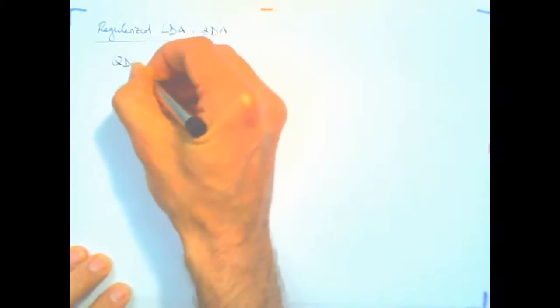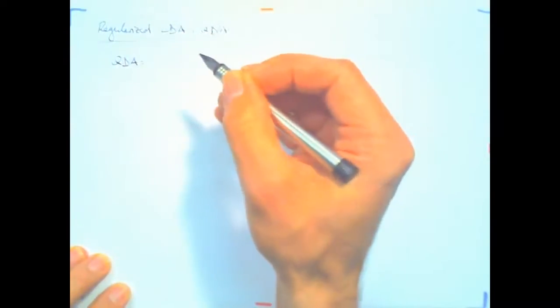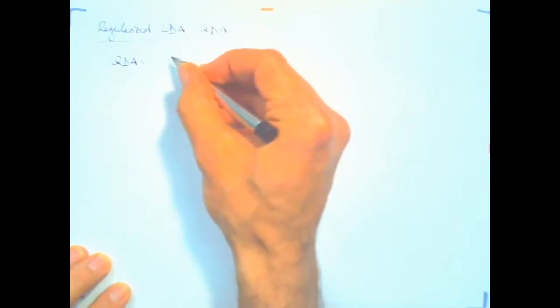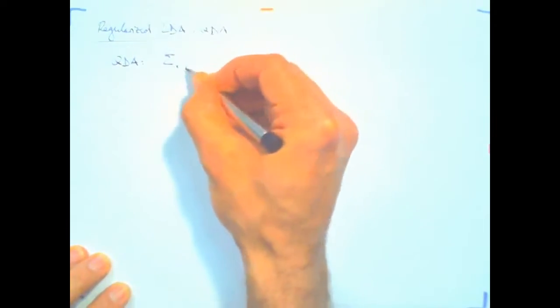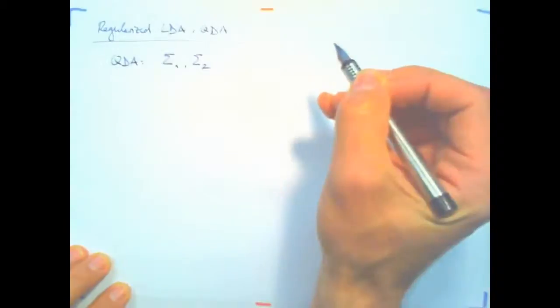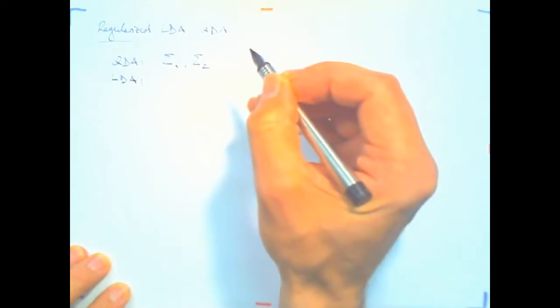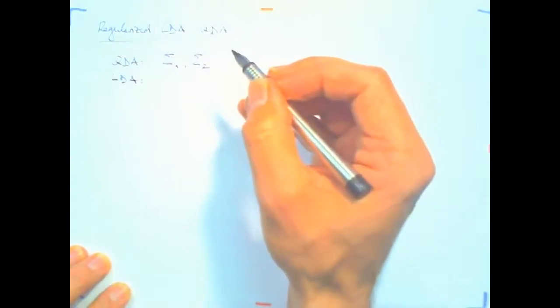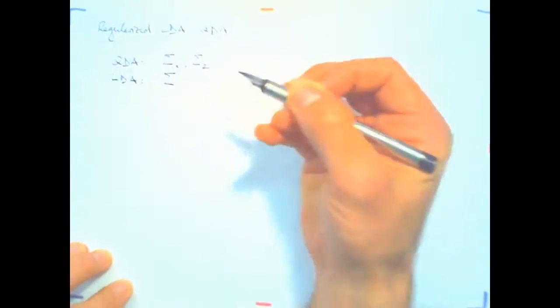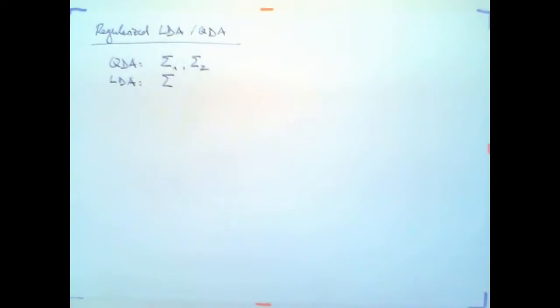Okay, so we had seen that in QDA, we had estimated a class covariance matrix for each class. So, we had sigma 1, sigma 2. Whereas in LDA, we had estimated a single covariance matrix sigma pooled for both classes.